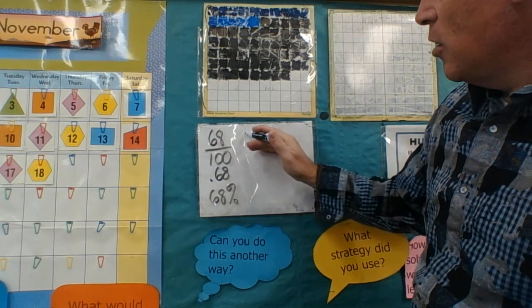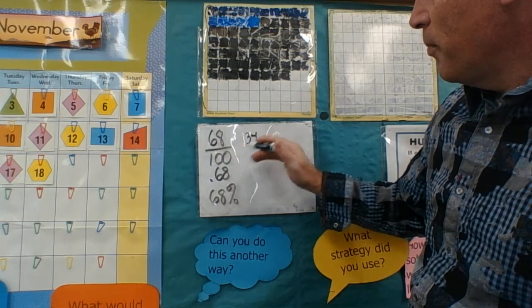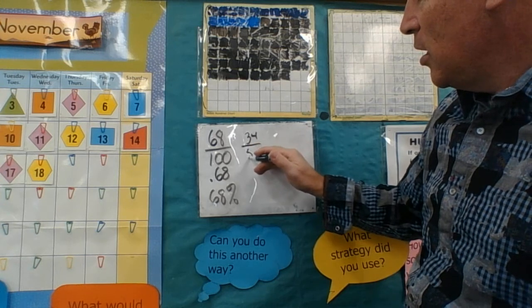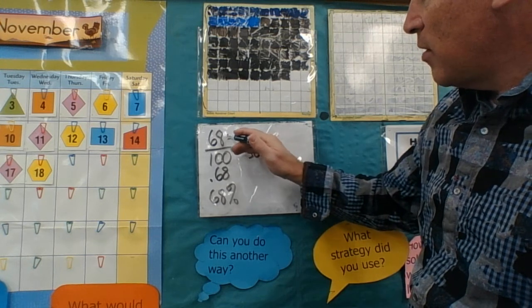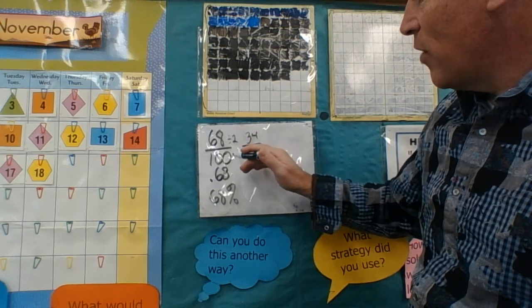So half of 68 would be 34. Half of 100 is 50. That's the same thing as dividing by 2, dividing by 2.